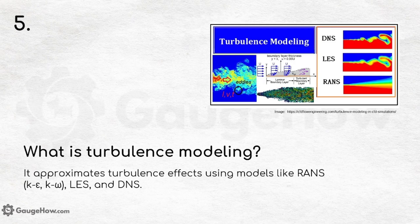What is turbulence modeling? It approximates turbulence effects using models like RANS, LES, and DNS. DNS stands for Direct Numerical Simulation, LES for Large Eddy Simulation, and RANS for Reynolds-Averaged Navier-Stokes simulation.